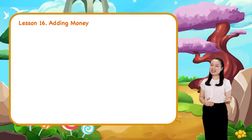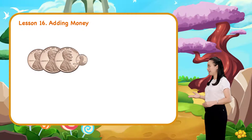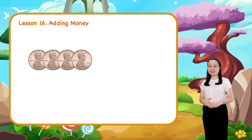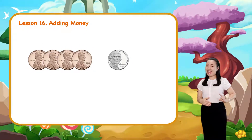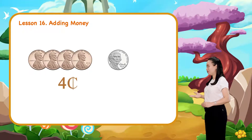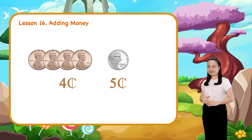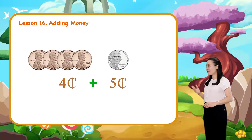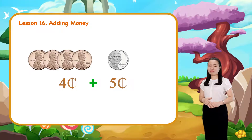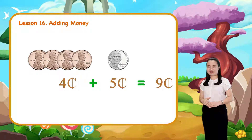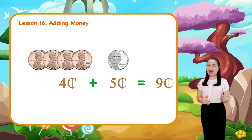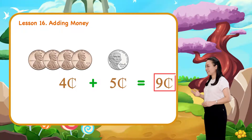Here we have four pennies and a nickel. Four pennies are worth four cents. The nickel is worth five cents. Adding four and five, we get nine. So, we have nine cents.